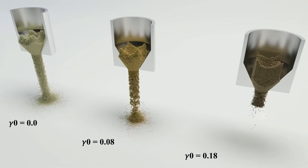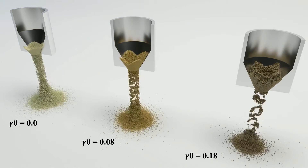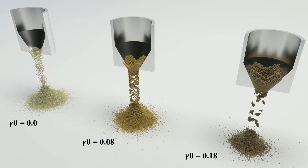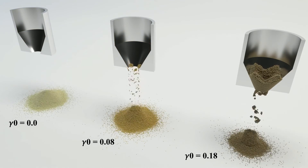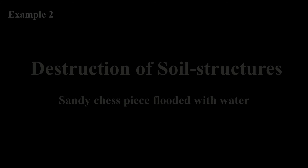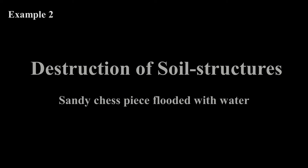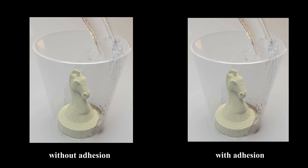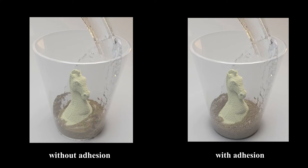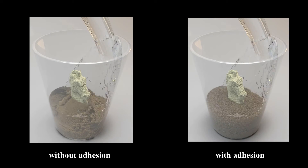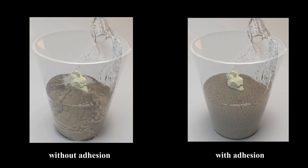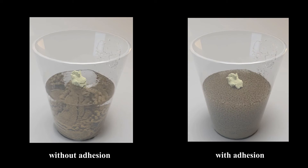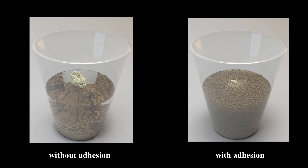Example 1 demonstrates the capacity of the capillary model for capturing realistic sandy-like and clay-like soil behaviors. Example 2 shows sandy structure destruction caused by water poured into a cup. In this example, we compare the visual effects of the soil-water mixture under different coefficients of the adhesion model.